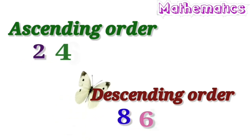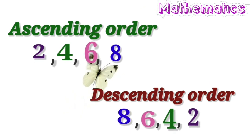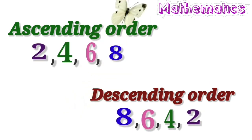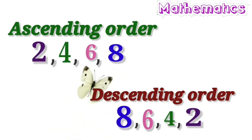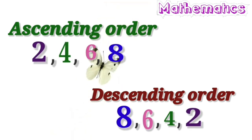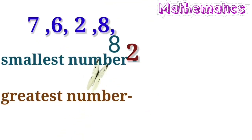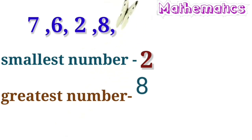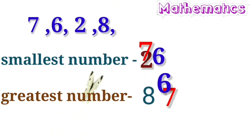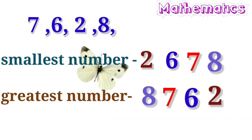In previous class, we have studied about ascending and descending order. To form smallest number, we should arrange the digits in ascending order. To form greatest number, arrange the digits in descending order. Smallest number banane ke liye digits ko ascending order mein arrange karna ho ga. And greatest number banane ke liye digits ko descending order mein arrange karna ho ga. Let us see with the examples to understand better.